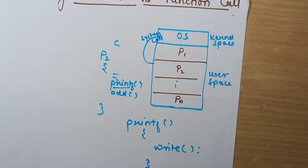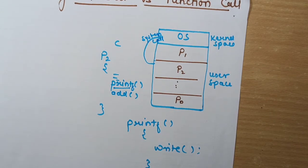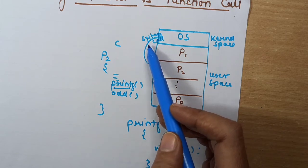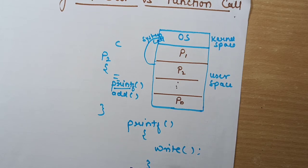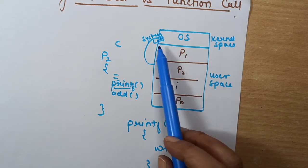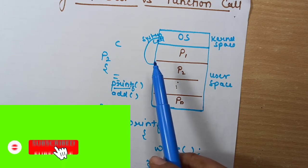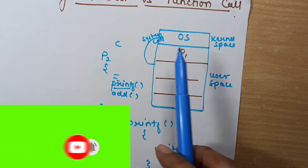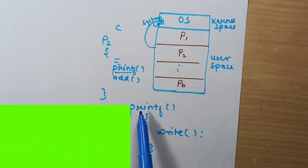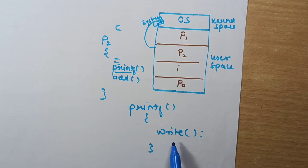The call which is given by the process to the operating system to perform something on the system is called a system call. A process cannot directly access any IO devices — it needs to ask the operating system, and the method to do that is the system call. The implementation of system calls is done in various ways in different operating systems, but the logic is the same: you must ask the OS via a system call.